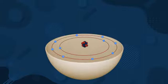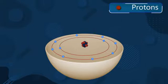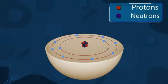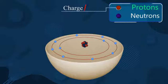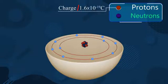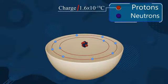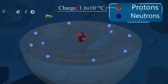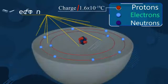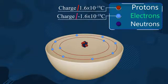Let me take an atom and show it to you. In the center you have the nucleus. The nucleus has protons and neutrons. The proton has a charge of 1.6 × 10⁻¹⁹ coulomb. The neutrons have no charge at all — they are neutral. And around the nucleus you will observe electrons revolving around it. These electrons have a charge of −1.6 × 10⁻¹⁹ coulomb.